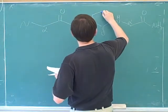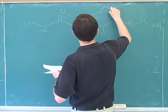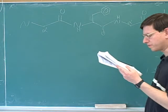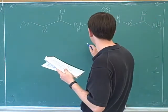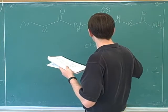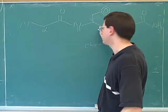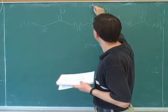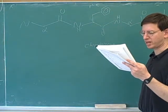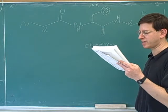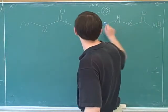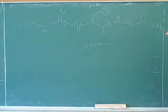Let's figure out where chymotrypsin would cleave. This amino acid here is phenylalanine. If you look it up in the table, you see that chymotrypsin cleaves on the carboxy side of phenylalanine. So you have to decide: is it going to cleave this bond on the left or this bond on the right?